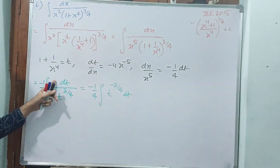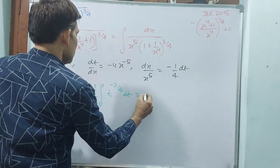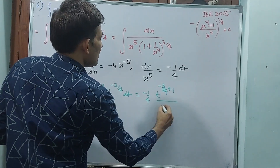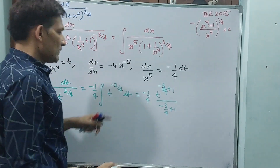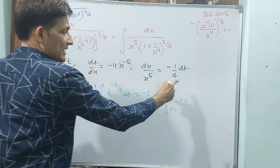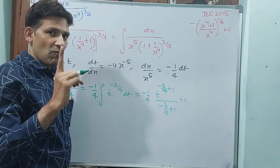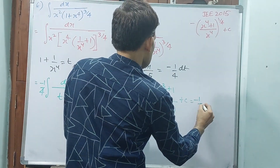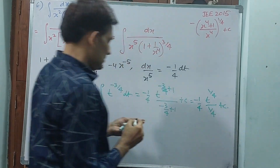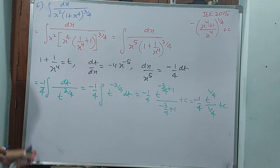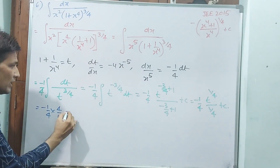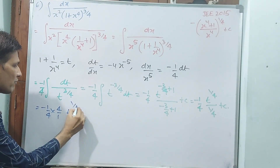Is it okay? If it goes to numerator, minus. That is equal to minus 1 by 4 into t power (minus 3 by 4 plus 1) by (minus 3 by 4 plus 1) plus c. Because the integration is done. Minus 3 plus 4 gives 1, so 1 by 4. Minus 1 by 4 into t power 1 by 4, divided by 1 by 4, plus c.